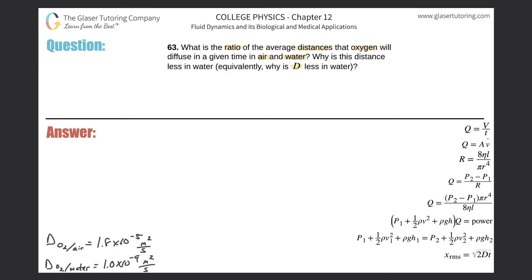We spoke about this a little bit before on problem number 62. The average distance is going to be equivalent to the root mean square distance. So x_rms (RMS stands for root mean square) - think of this as just the average distance.